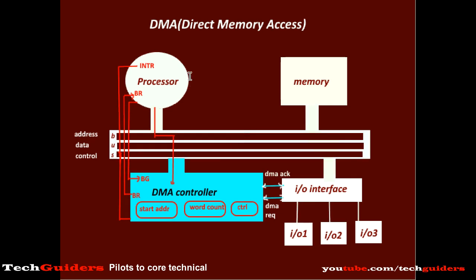This mode of DMA transfer — in which the DMA takes control over the bus, transfers the whole block of data, and after completion gives bus control back to the CPU — is called the burst mode of DMA transfer. During the entire duration of the block transfer, the CPU cannot use the bus but can continue with other tasks. Also, the CPU has to just hold off with no context switching and no saving of state information, hence a lot of overhead is avoided.